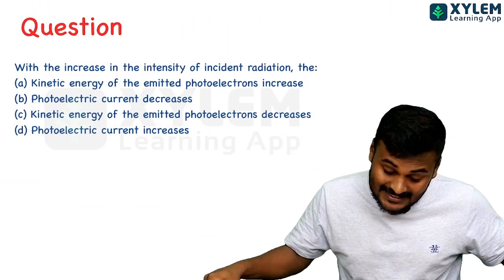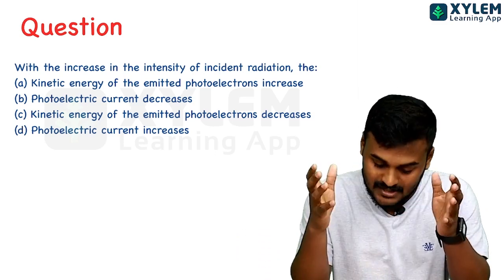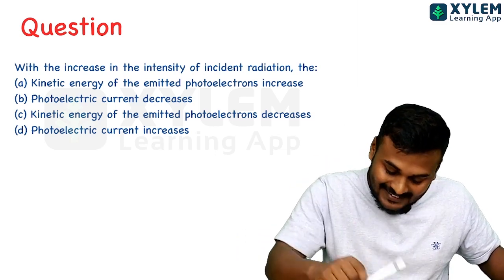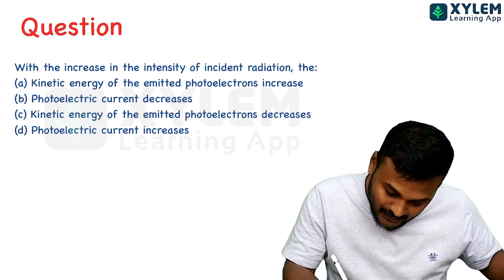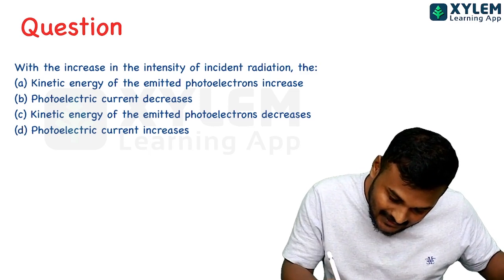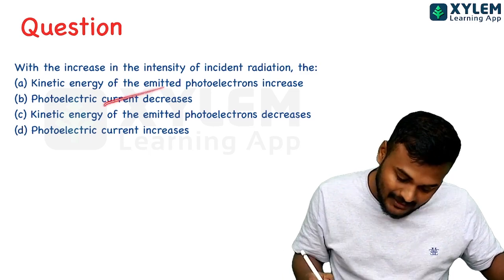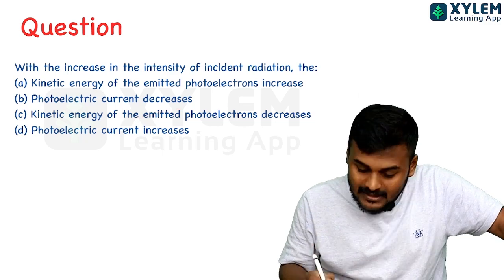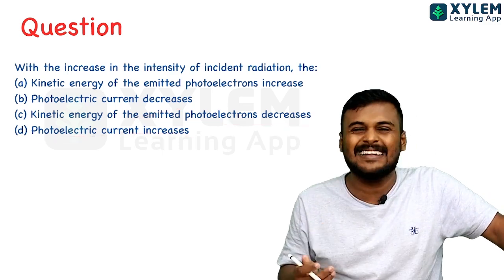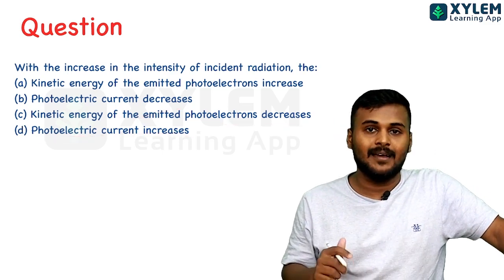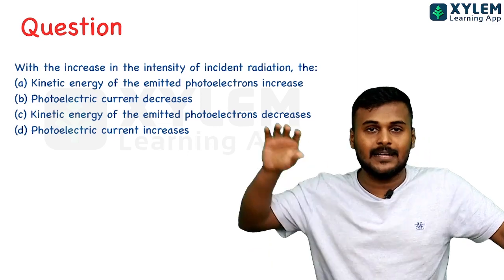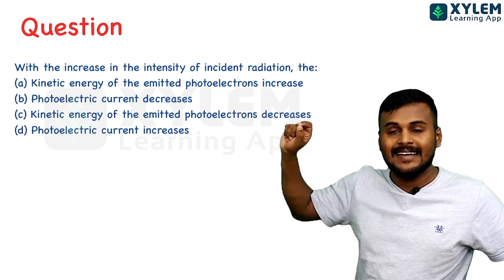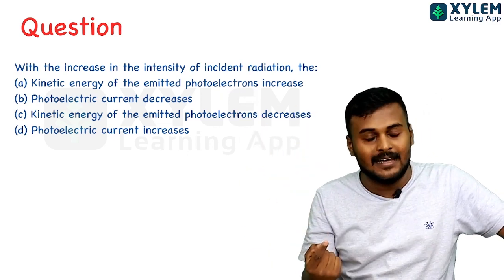With increased intensity of incident radiation, what happens? Options include: the kinetic energy of emitted photoelectrons increases, photoelectric current decreases, kinetic energy of emitted electrons decreases, or photoelectric current increases. If you read the statement properly, we are going to talk about intensity of incident light.